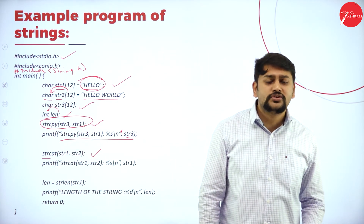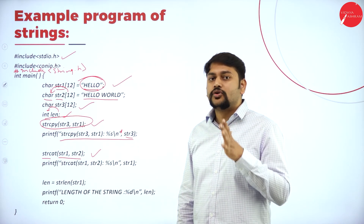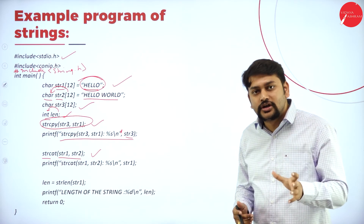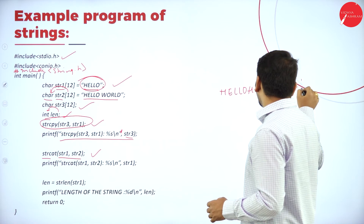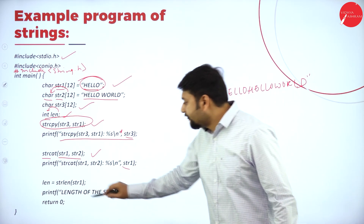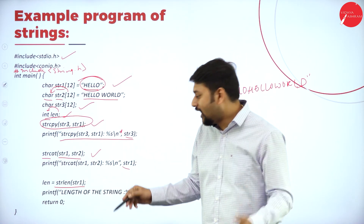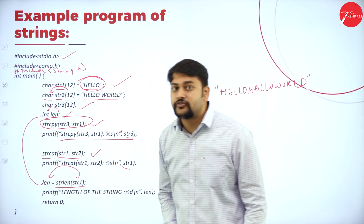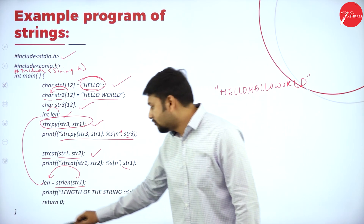After that, the program uses strcat — string concatenate — on str1 and str2. So 'hello' and 'hello world' are added together, giving the output 'hello hello world'. Then strlen is used to find the length of str1, and the result is stored in an integer variable, since length is an integer value. That result is then printed.